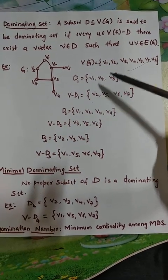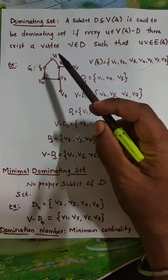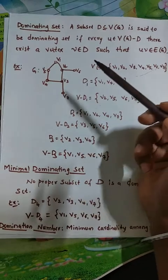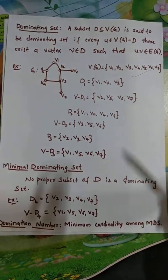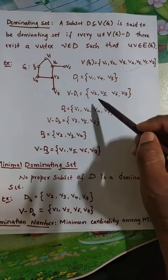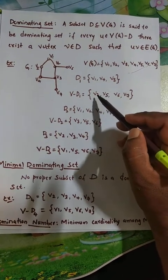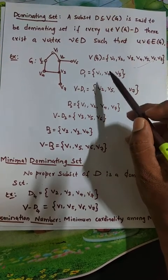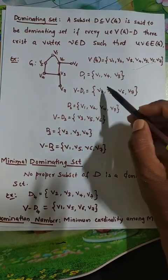Let us select a subset D1 = {V1, V3, V4}. This is a subset of the vertex set of G, so its complement is V2, V5, V6, and V7. Let us verify whether D1 is a dominating set. In the complement, V2 is adjacent to V1, which is in D1, so there exists an edge between V2 and D1.